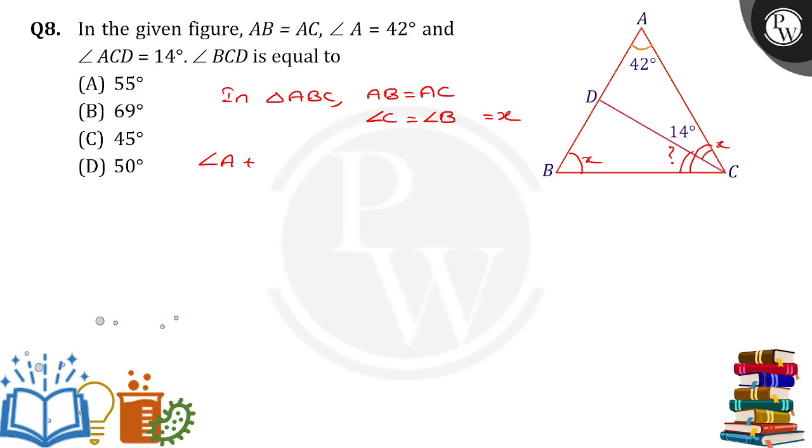So by using angle sum property, angle A plus angle B plus angle C equals 180 degrees. Angle A is given as how much? 42 degrees. So 42 plus X plus X equals 180 degrees.